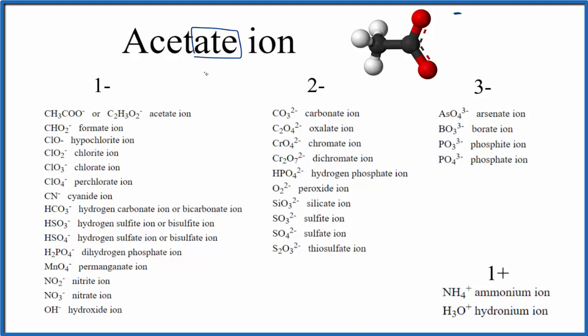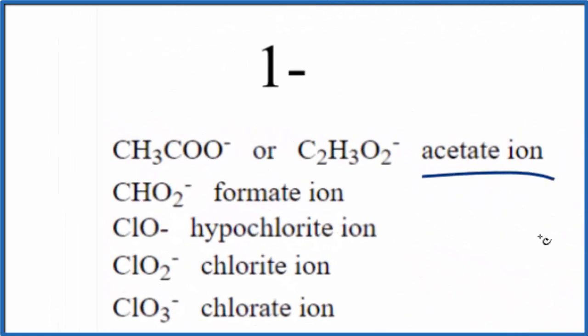So you either remember that the chemical formula for the acetate ion is CH3COO-, or, if you're allowed, you look it up on a table of polyatomic ions. So this is our table of polyatomic ions, and the first one on the list, that's the acetate ion right here.